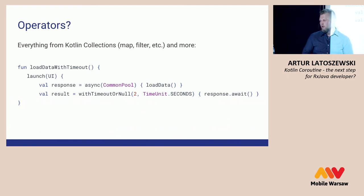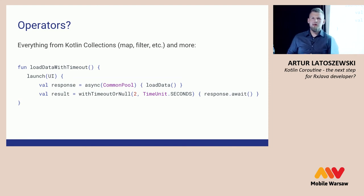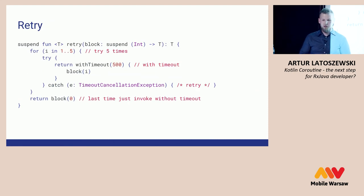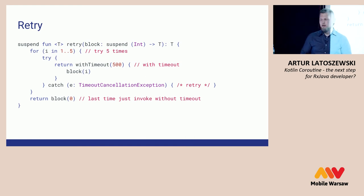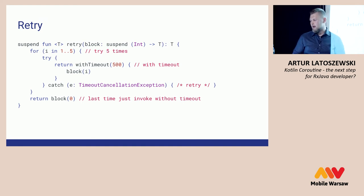What's also great about Kotlin coroutines is that you can very easily write your own operators — much easier than with RxJava, because you are writing in a sequential way. Here is an example of a retry operator: we try five times, waiting 15 seconds for the block result each time. If it doesn't succeed, it will throw a TimeoutCancellationException. On the last attempt, we call the suspend block without any timeout.